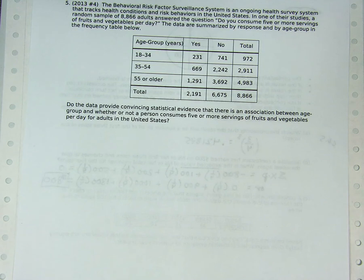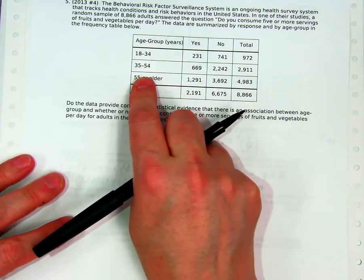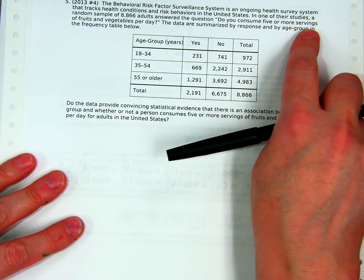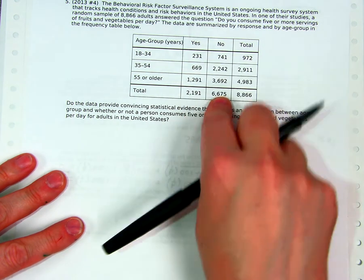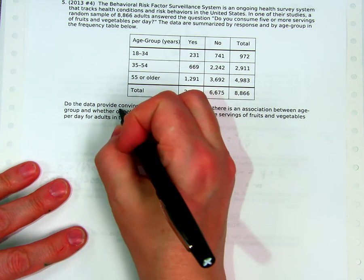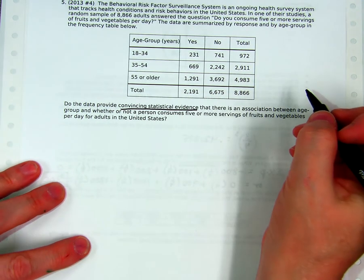Hello, this is the second of two Chapter 11 Free Response Practice Problems, December 4 from 2013. We've got this situation where they're tracking each group of people and asking them about whether they consume five or more servings of vegetables, yes or no. We've got a two-way table here and we're supposed to do something about convincing statistical evidence, which means a four-step test.